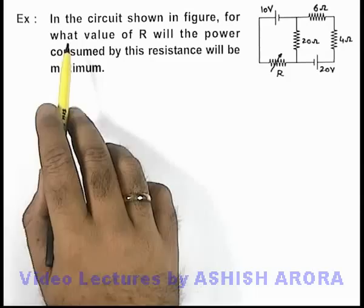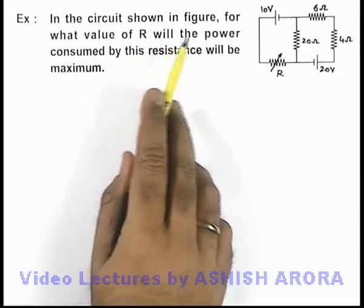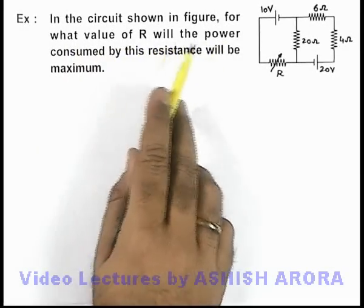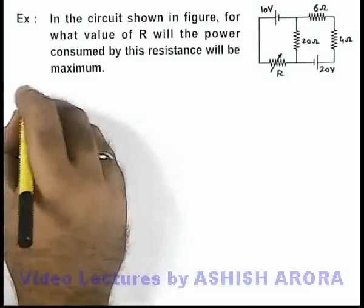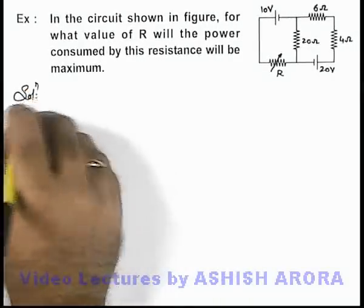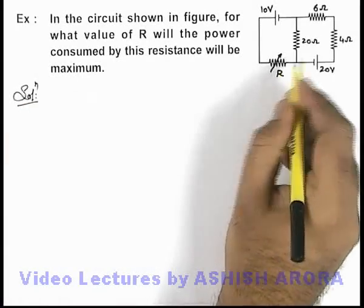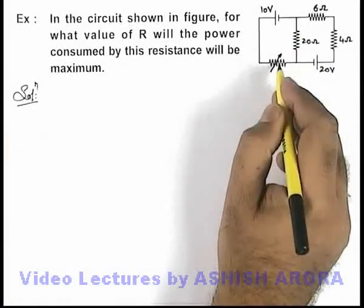This example says that in the circuit shown in figure, for what value of R will the power consumed by this resistance be maximum. In this situation, we have to find the value of R so that power transferred by the circuit to the resistance is maximum.